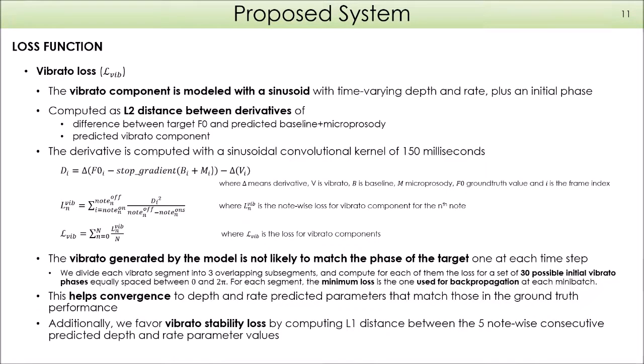For dealing with that, we compute for each note the loss for 30 possible initial vibrato phases, equally spaced between 0 and 2π, and we take all those loss values and use the minimum loss for backpropagation in each minibatch. This way, we help convergence to depth and rate predicted values which are similar to those in the ground truth. Additionally, we favor smooth vibrato depth and rate envelopes by adding the L1 distance between consecutive predicted depth and rate parameter values.